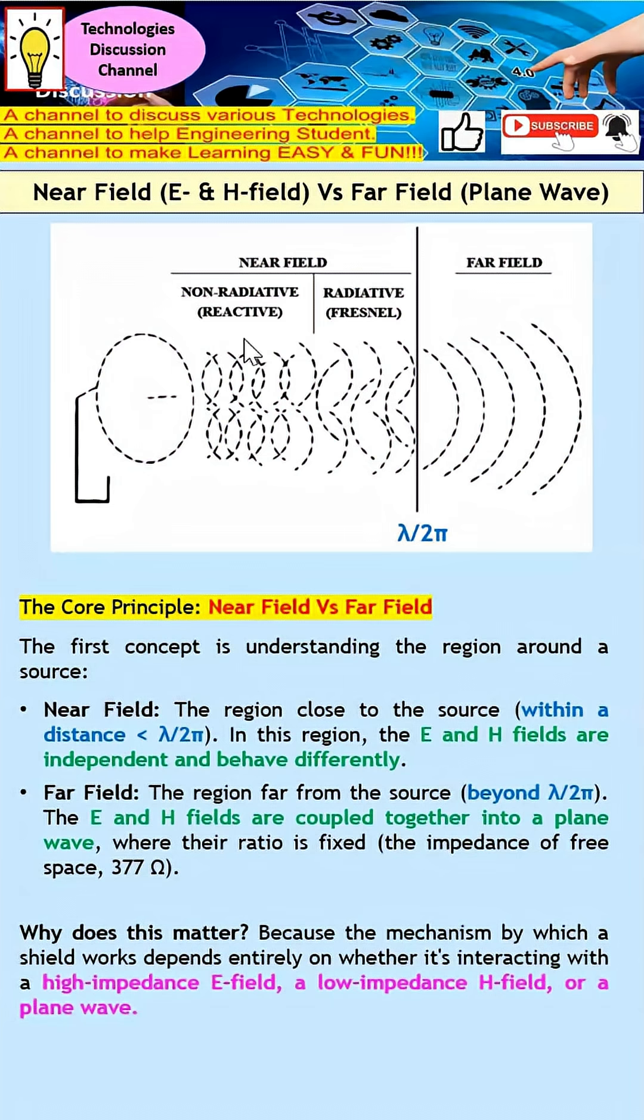We need to design our shield based on the source, which I will further elaborate. As for far field, the E field and H field merge and have an impedance of 377 ohms. Therefore, we only have plane waves in the far field.